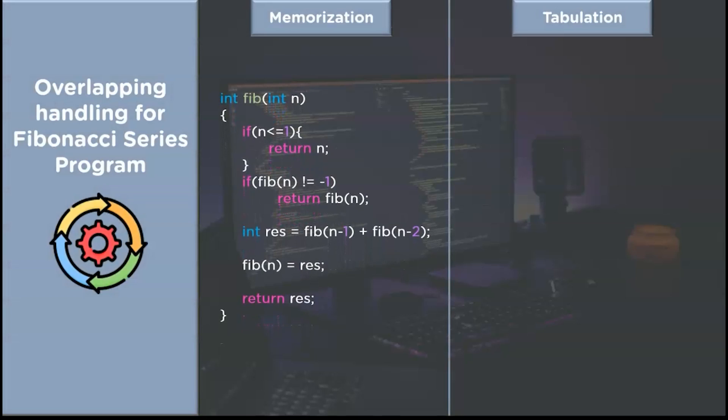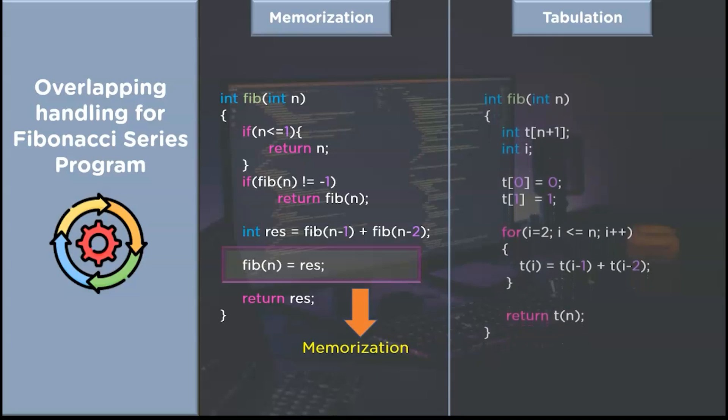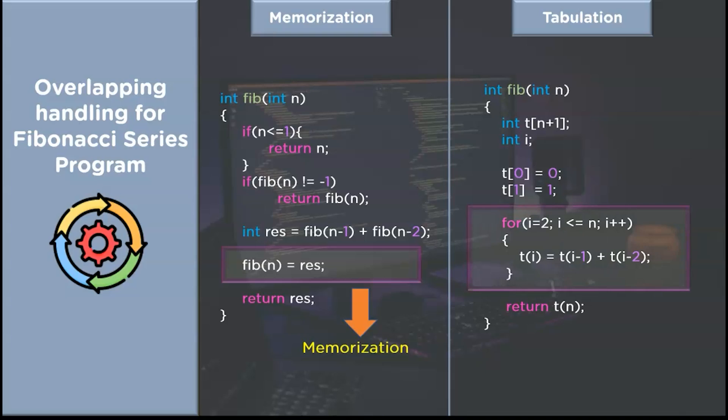If we implement the Fibonacci series program using the top-down approach, the code for function Fib will look something like this. The one additional step — Fib[N] = res — does the memoization job for us. If we develop a Fibonacci sequence program using the bottom-up approach, our program will look something like this. The highlighted for-loop calculates solutions to all sub-problems from the base case.